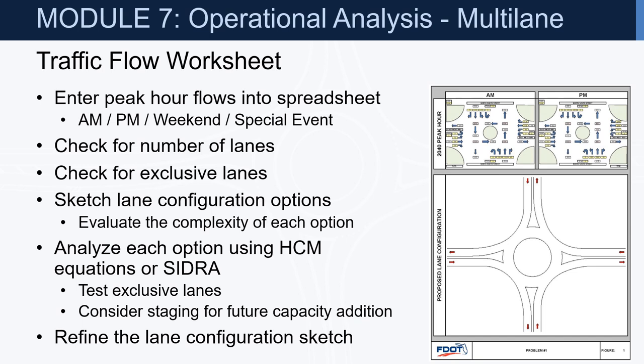Take those forecasted traffic volumes and enter those flows into the spreadsheet — AM, PM, weekend, special events, whatever critical period you need to analyze. Check for the number of lanes, check for exclusive lanes, sketch that lane configuration or maybe some options, and evaluate the complexity of each option. Then analyze those options using the HCM equations or CIDRA for more complicated geometrics, test for exclusive lanes, consider staging for future capacity addition, and refine that lane configuration sketch before moving into design.